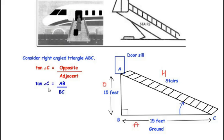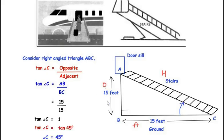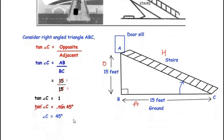Substituting the values: tan(C) = 15/15 = 1. Since tan(45°) = 1, we get tan(C) = tan(45°), so angle C = 45°. The stairs are inclined at 45 degrees to the ground.